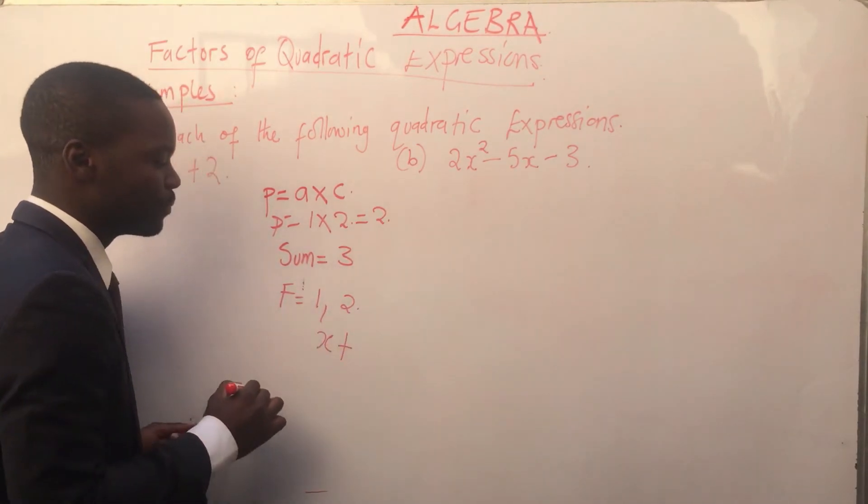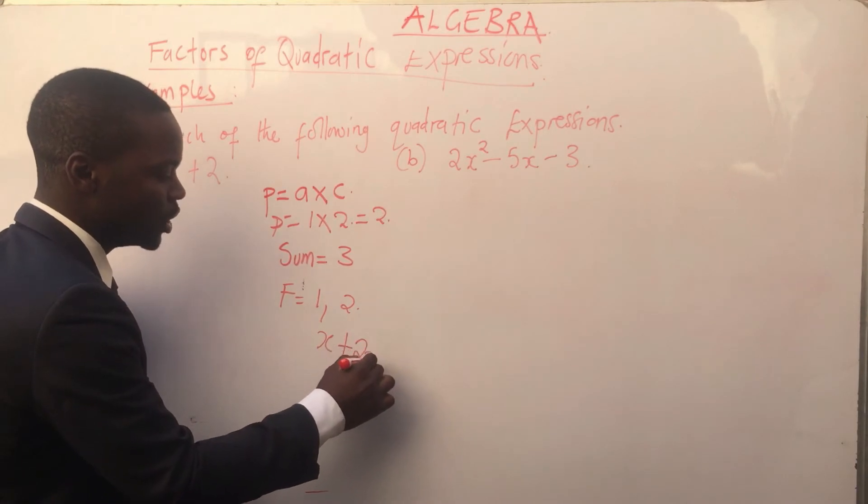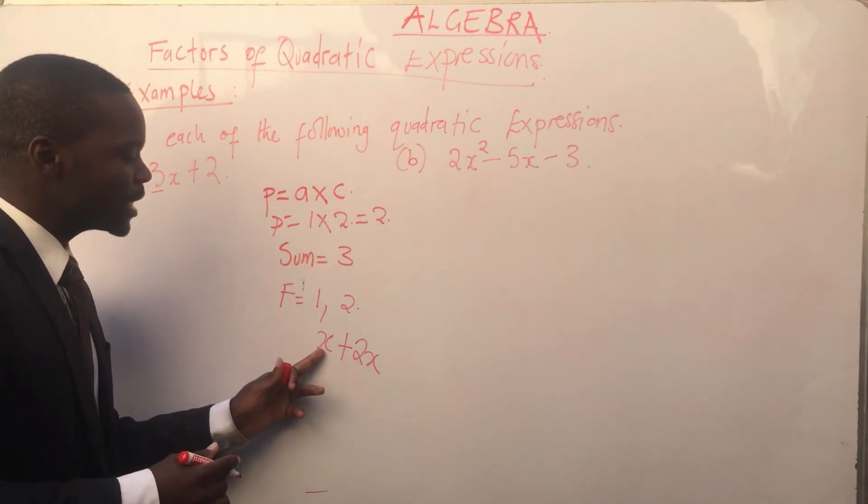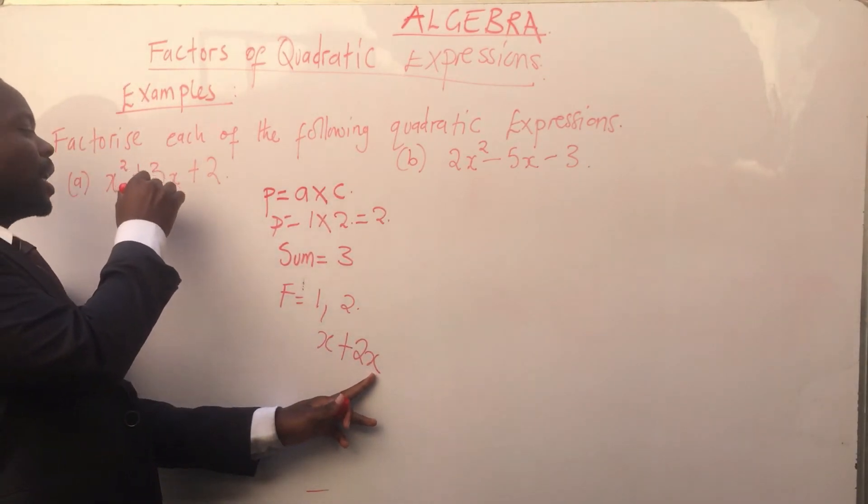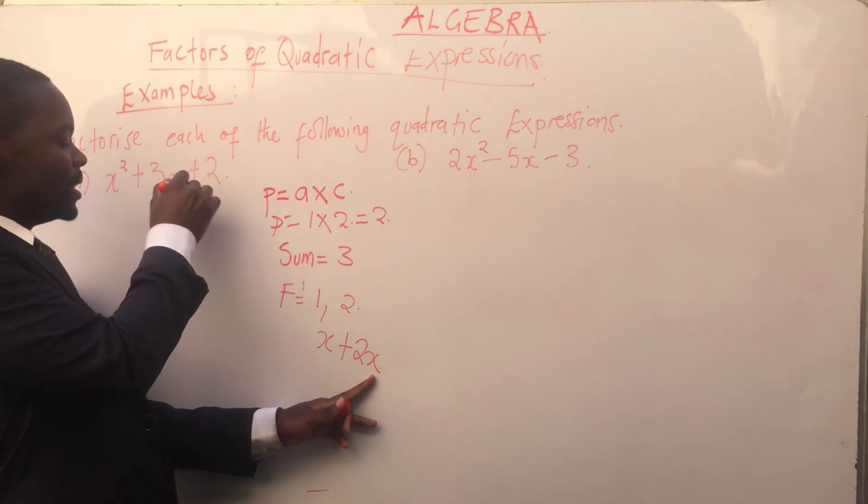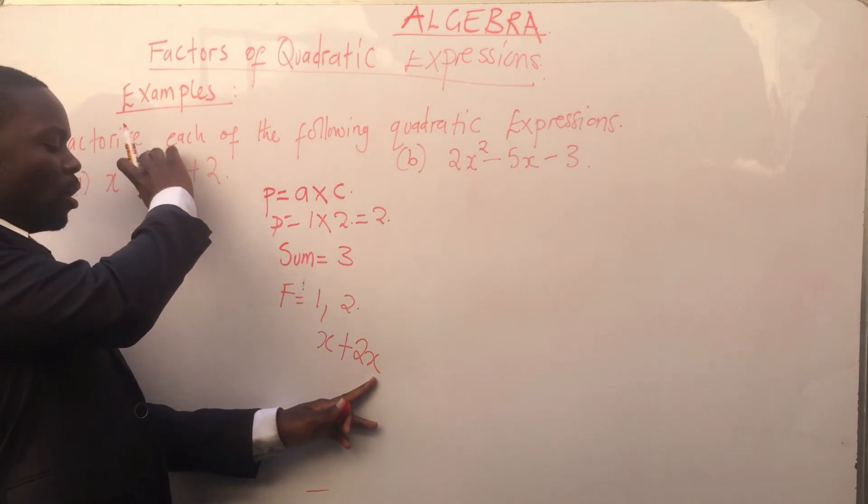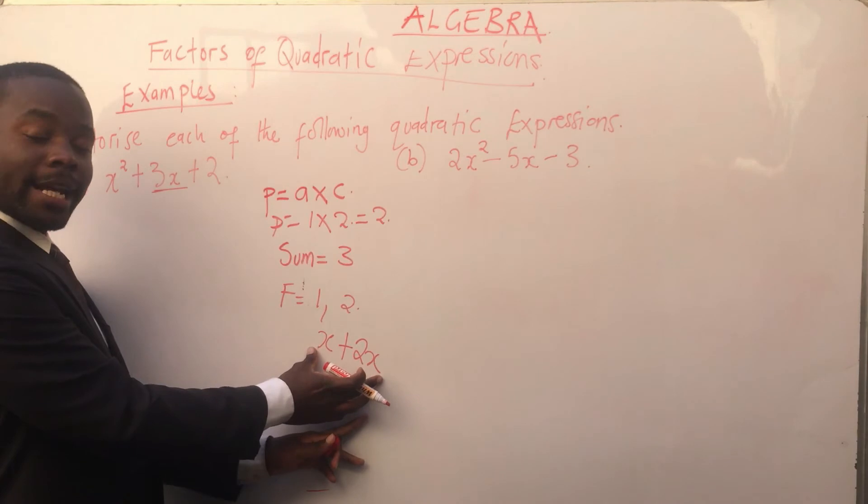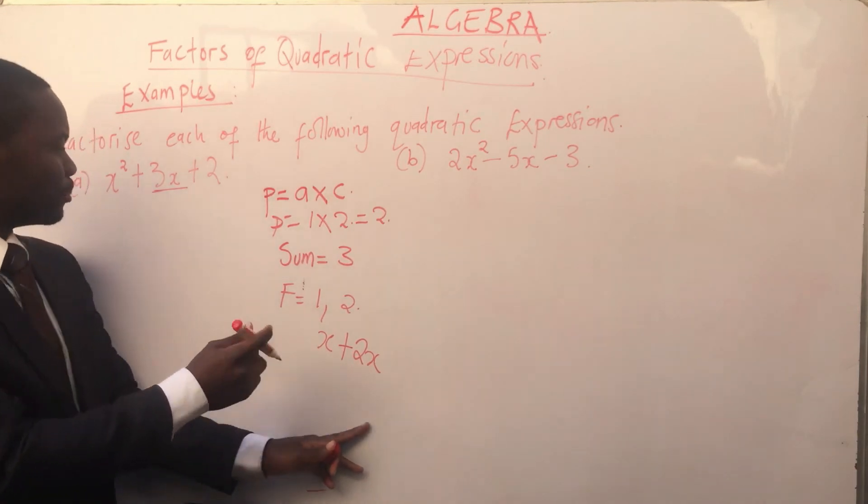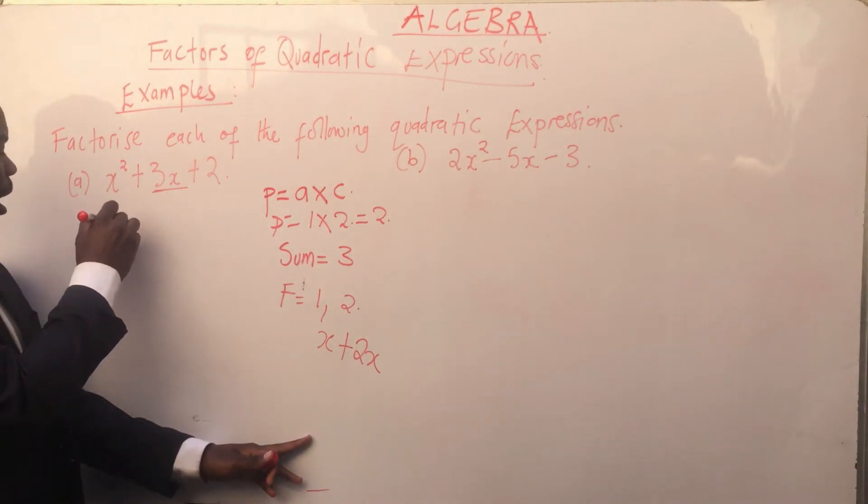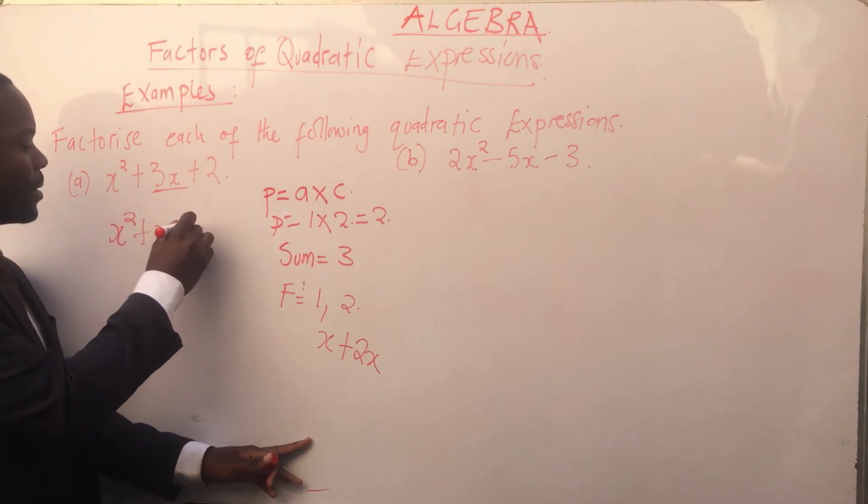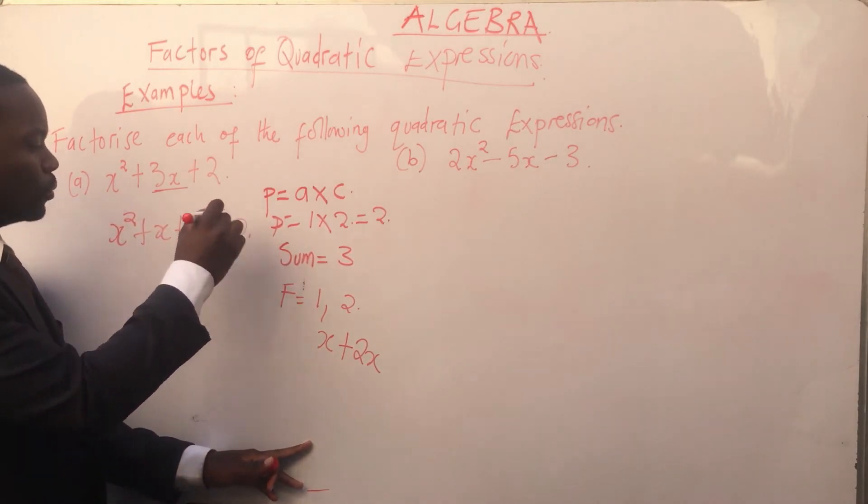So x plus 2x equals this 3x which is here. This means that wherever there is 3x, we are going to substitute it with x plus 2x. Very simple. So we are going to have x² + x + 2x + 2.